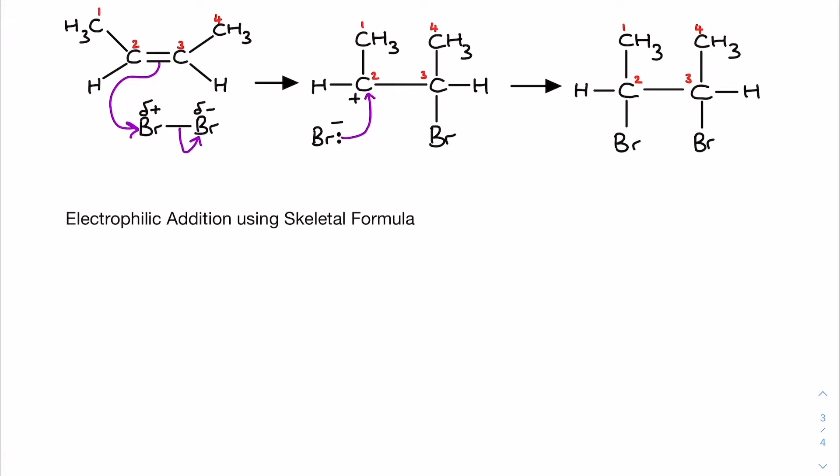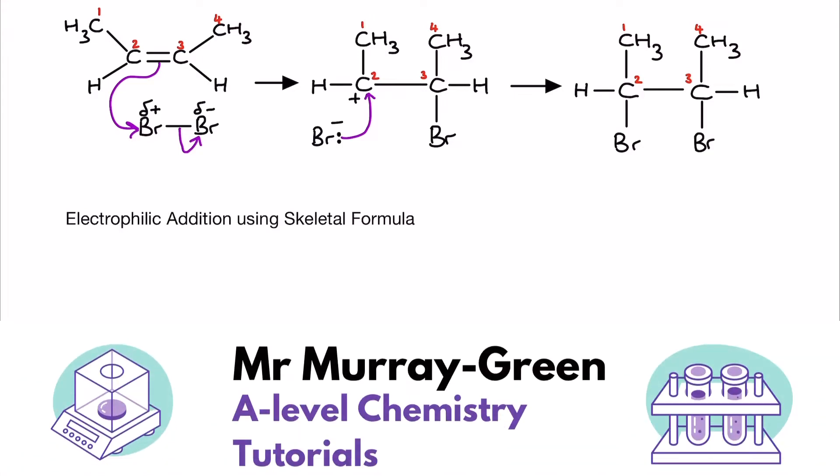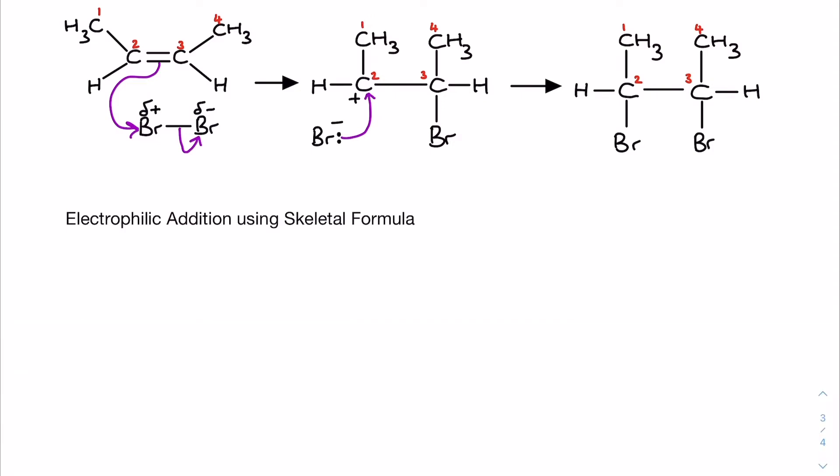Being able to draw or interpret a curly arrow mechanism using skeletal formula is absolutely crucial towards A-level success at the very top end. You might think to yourself, why would I ever outline a mechanism in an exam using purely skeletal formula? But we actually do this for electrophilic substitution, just in the regular way of learning it. So how can we apply that kind of understanding to other mechanisms and why is it so important for progress in your exams?